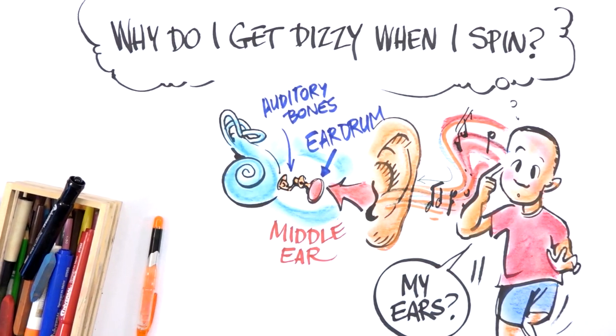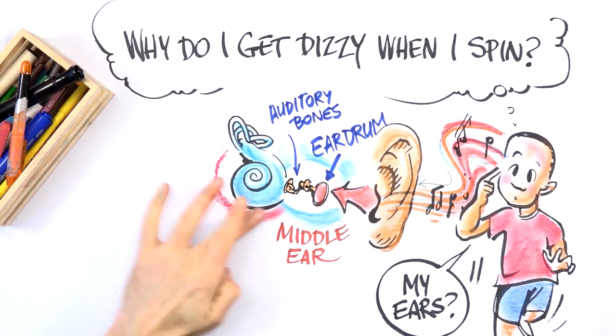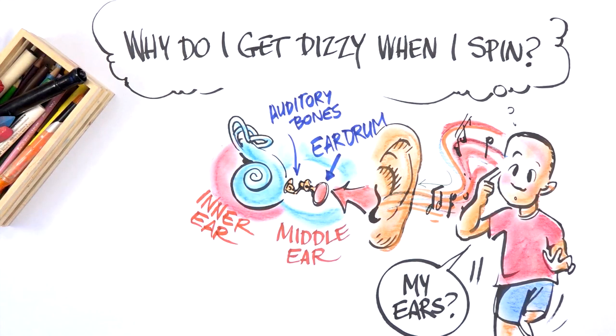And it's that vestibule that helps us keep our balance. The vestibule looks like three curved tubes all tilted in different directions, and they're filled with fluid and lined with tiny little sensory hairs.